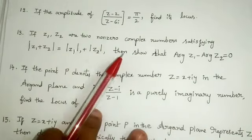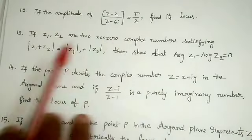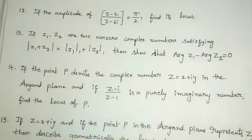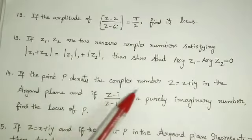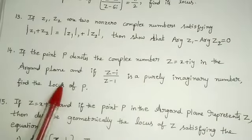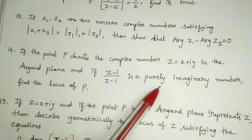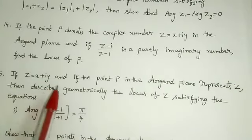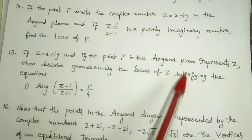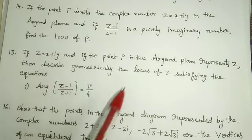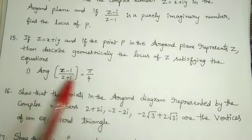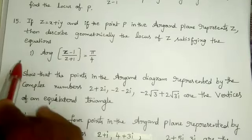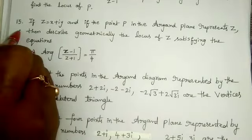Next one: if z1 and z2 are two non-zero complex numbers satisfying mod of z1 plus z2 is equal to mod z1 plus mod z2, then show that arg(z1) minus arg(z2) is equal to 0. If the point P denotes the complex number z equals x plus iy in the Argand plane and if z minus i by z minus 1 is purely imaginary, then find the locus of P. And next one: if z equals x plus iy and if the point P in the Argand plane represents z, then describe geometrically the locus of z satisfying arg of z minus 1 by z plus 1 is equal to pi by 4. This is also an important question.